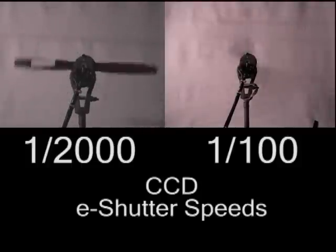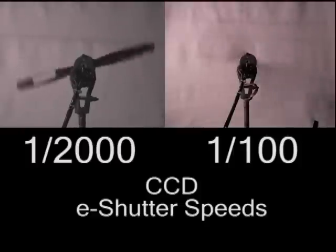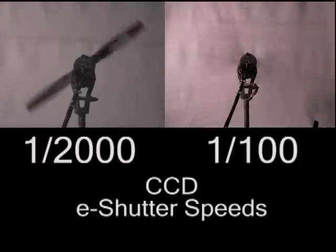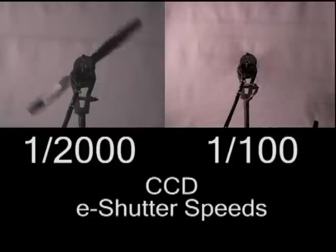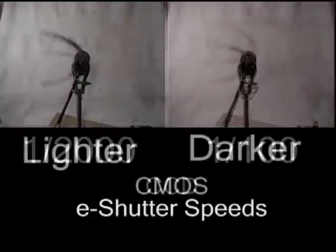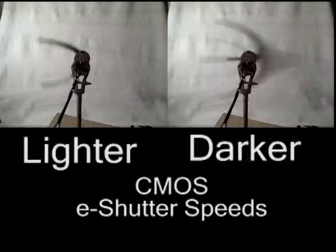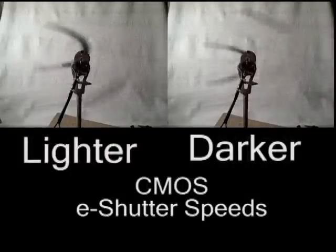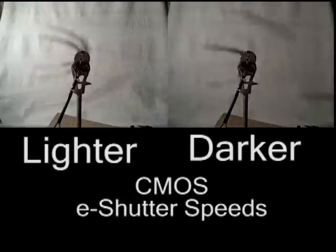Most point-and-shoot cameras will do this automatically as the field being imaged becomes darker, which accounts for the reduction in artifact prominence on overcast days. Here, the same effect is being achieved with a CMOS-based camera by reducing light intensity.